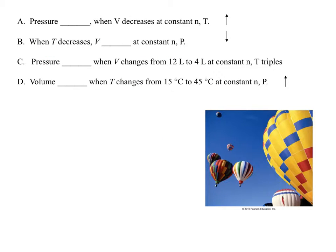Based on the relationships we've discussed: pressure does what when volume is decreased at constant moles and temperature? If V decreases, pressure increases by that same amount — cut volume in half, double the pressure. When temperature decreases, what happens to volume? Temperature and volume are directly related, so it will also decrease. If volume changes from 12 to 4 — decreasing by a third — pressure will triple. And if temperature increases by a factor of 3, volume will also increase by a factor of 3.